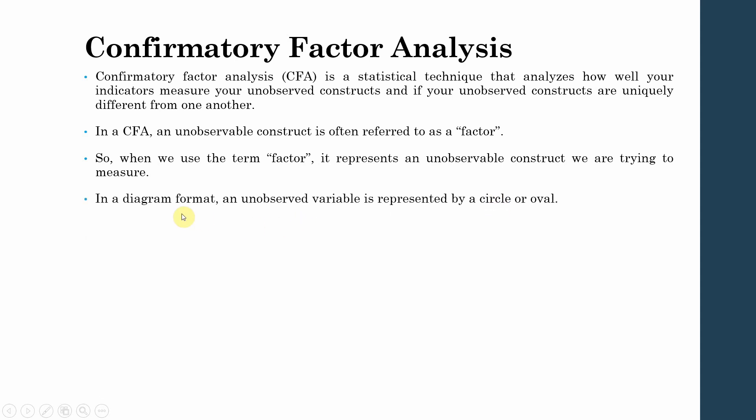In a diagrammatic format, an unobserved variable is represented by a circle or oval, and the indicators that measure the unobserved variable will have single-headed arrows coming from the unobserved construct to each of the indicators.